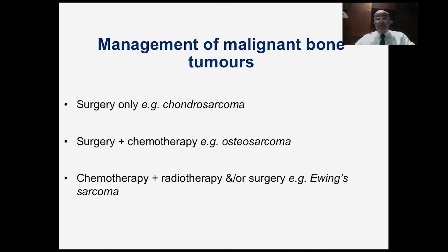Different bone tumors are treated differently. Tumors like chondrosarcomas are treated with surgery alone. Osteosarcoma, on the other hand, is treated by both surgery and chemotherapy. Whereas Ewing sarcoma is treated by chemotherapy and surgery or radiotherapy as a local treatment.